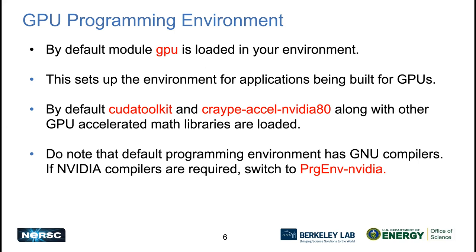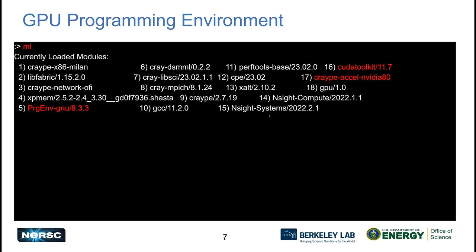You'll also notice the CUDA toolkit module and the CRAY-XL and NVHPC module loaded. These are required if you want to use GPU-specific features. The default programming environment is GNU, so if you log into Perlmutter and do a module list, you'll see the GPU module and GPU-specific modules loaded along with the GNU programming environment. If you want to use the NVIDIA programming environment, you will have to switch to it.